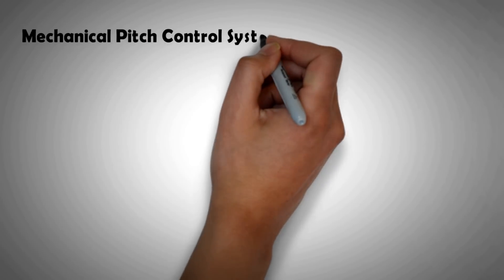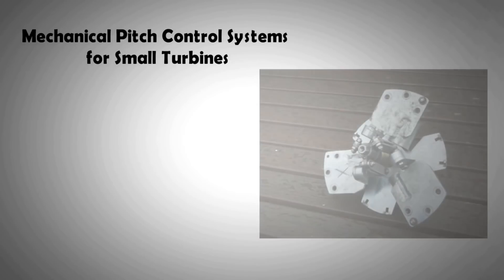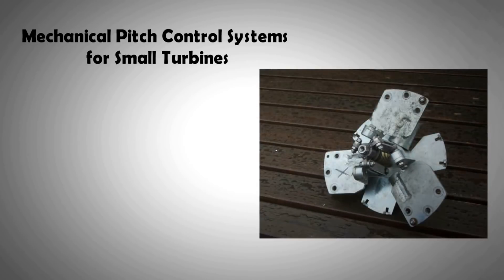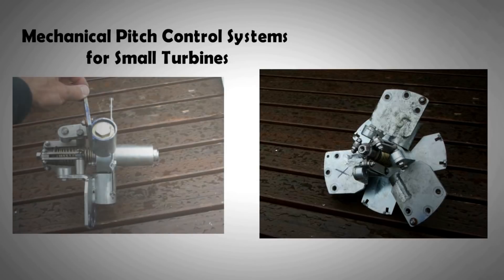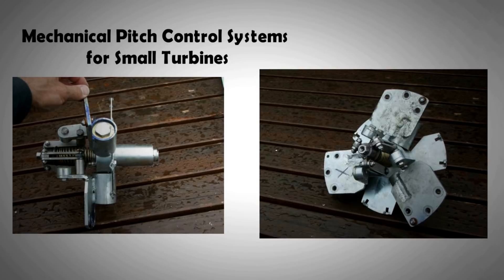However, some turbine manufacturers have found a clever solution. They have introduced a spring-based mechanism which allows the blades to be rotated back by extreme wind loads. And as the wind load reduces, the spring forces the blade back to their original position. In effect, it is a simple self-regulating system that doesn't require any electrical components to operate.